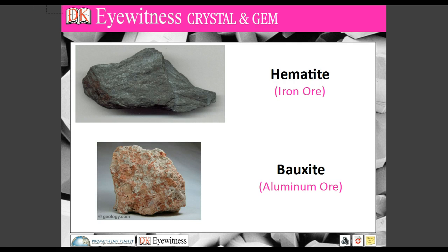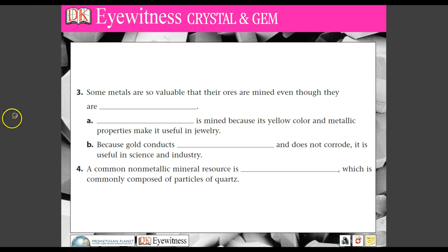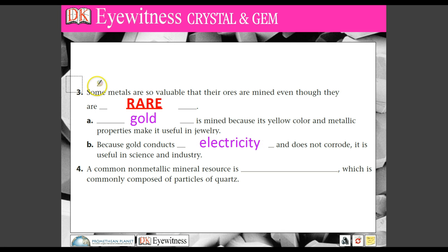These are what we call common metallic resources. However, there are some metals that are so valuable that the ores are mined even though they are rare. The most common we think of is gold, and silver would be another. Gold is mined because of its brilliant yellow color and metallic properties that make it useful in jewelry. Gold also conducts electricity and doesn't corrode, making it useful in science and industry. In fact, certain cables that send data and video are lined with gold because it conducts electricity so well. There's a whole range of resources like gold used in high-tech things — what we call rare earth metals. From your iPhone to your TV to your computer, all of those use rare resources to transfer data in high technology.